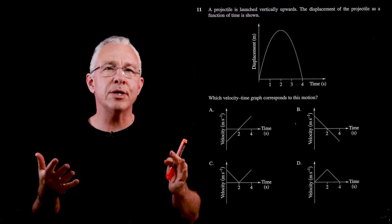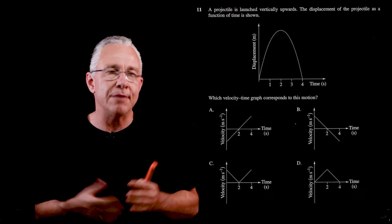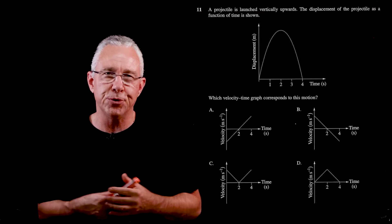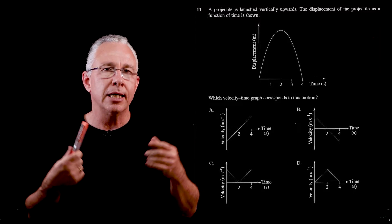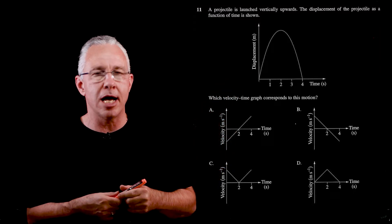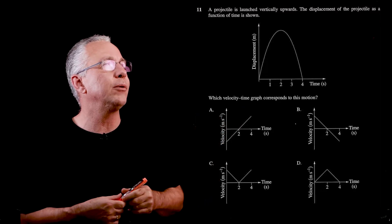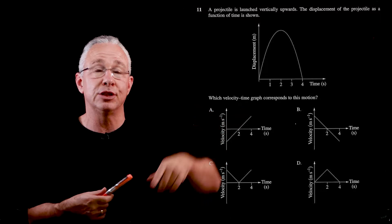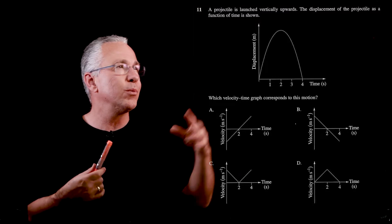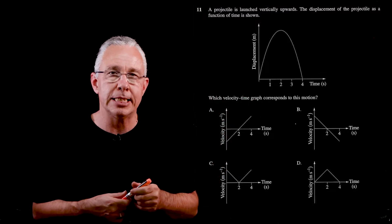In this question, we're applying our understanding of graphs, dealing with projectile motion from Module 5, Advanced Mechanics. We have a displacement-time graph for a projectile going up and down, and we're asked what the velocity-time graph would look like.